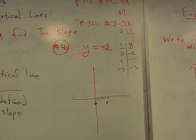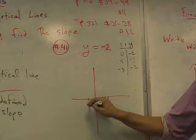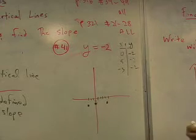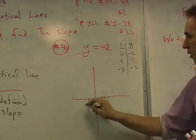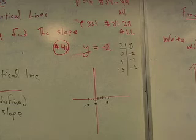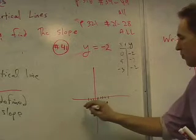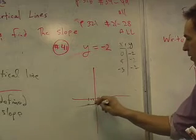And what about negative 3, negative 2 for that one? And down 2. Guess what we have. What kind of line do we have? Horizontal. It's a horizontal line. And guess what? What is a slope? Zero. Good job.